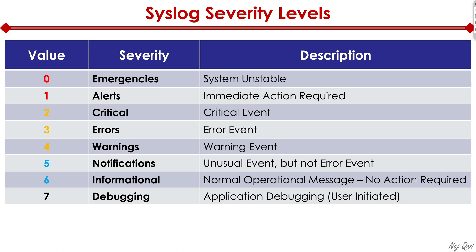There's another element of syslog we need to look at: syslog has what are called severity levels. The messages we see on our devices have different severity levels specified, and that helps us understand the criticality of the message. The first two values are zero and one. Zero stands for emergencies — if the system is unstable, you're going to get a severity value of zero.